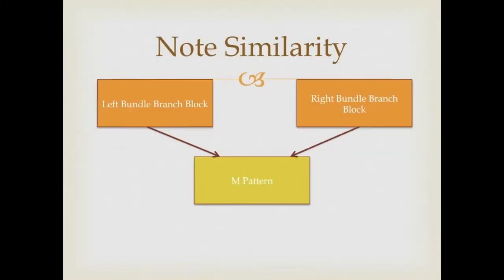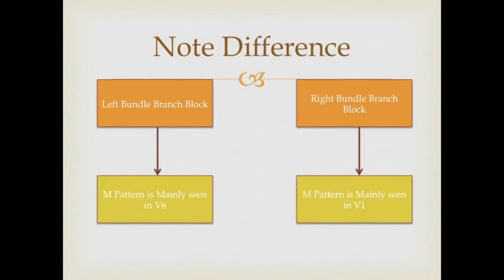Note the similarity between left bundle branch block and right bundle branch block: both show a broad complex with the presence of a notch on top, which looks like the letter M, also known as the M pattern. The difference is that the M pattern in left bundle branch block is mainly seen in V6, but can also be seen in V4 and V5, while the M pattern in right bundle branch block is mainly seen in V1.